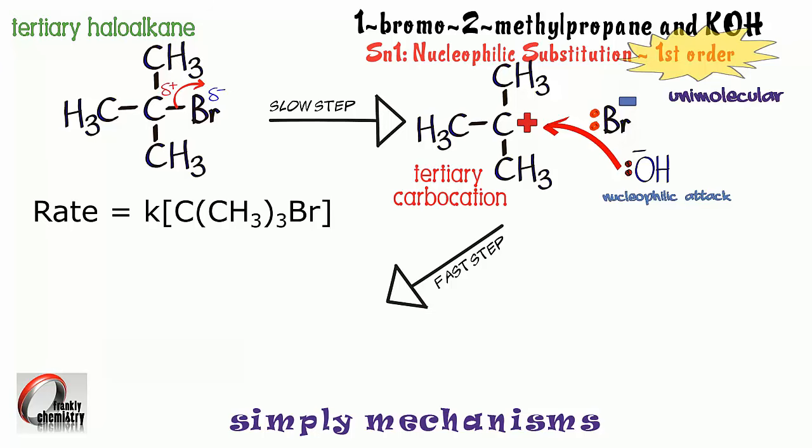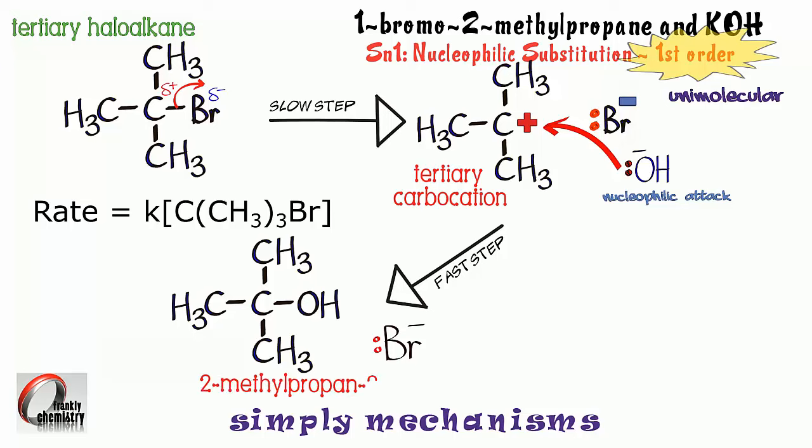And, we will then get a tertiary alcohol produced as a result. There you see the structure of the product. We've replaced the Br with the OH nucleophile. So, we need to show the bromide ions as well there. And, if we'd used potassium hydroxide, aqueous potassium hydroxide, then the other product would be potassium bromide. And, the name of the tertiary alcohol? 2-methylpropan-2-ol.